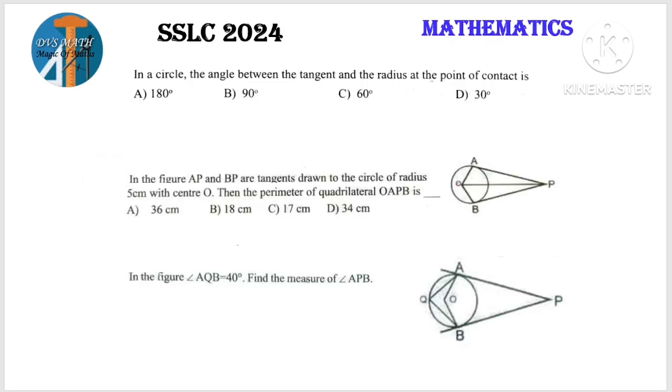First question: In a circle, the angle between the tangent and the radius at point of contact is what? If I consider a circle with a tangent, the straight line intersects the circle at one point. The tangent is perpendicular to the radius. As per theorem 1, this is 90 degrees.